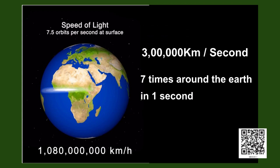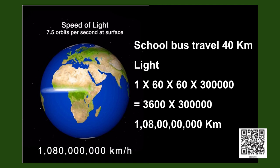Scientists have measured the speed of light to be approximately 3 lakh kilometers per second. That is, light can travel 3 lakh kilometers in one second, which means light can travel nearly 7 times around the earth in one second. So by the time your school bus travels 40 kilometers, light would have traveled 3 lakh into 3600 which is 108 crore kilometers. We get this number by multiplying the speed of light by the number of seconds in an hour.